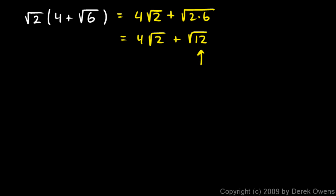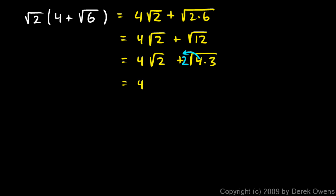We've seen this before — the square root of 12 can be written as the square root of 4 times 3. So I have 4 times the square root of 2 plus the square root of 4 times 3. This 4, when square rooted, becomes a 2 and pops out. So I end up with 4 times the square root of 2 plus 2 times the square root of 3, and that's my answer.